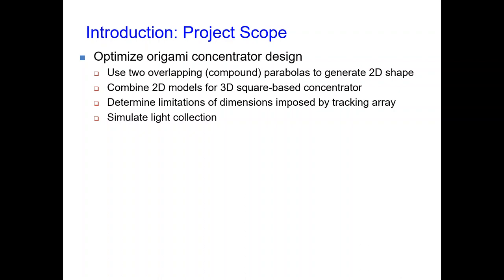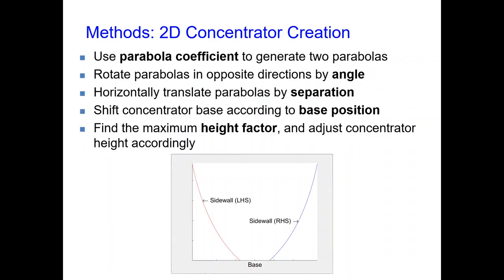To summarize, this project investigated how to optimize light collection of square-based compound parabolic concentrators. We start off with two-dimensional designs and vary parameters to see how they affect light collection, then move on to three-dimensional designs using the most promising two-dimensional ones. We investigated the effects of changing five parameters: the parabola coefficient, rotation angle, parabola separation, base position, and height factor. The first four variables are independent, and the last one, height factor, is dependent on the other four.